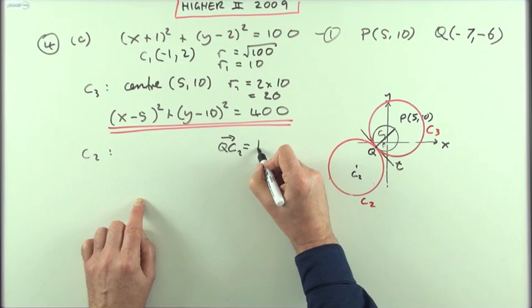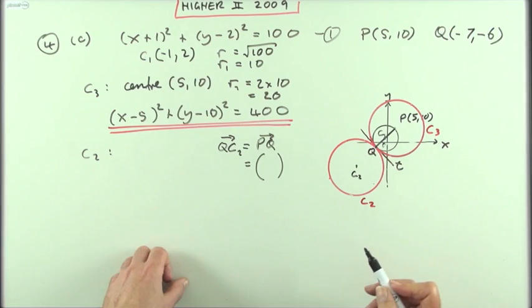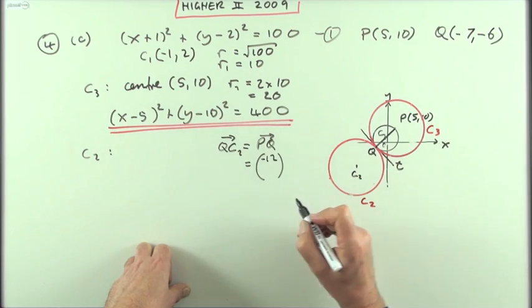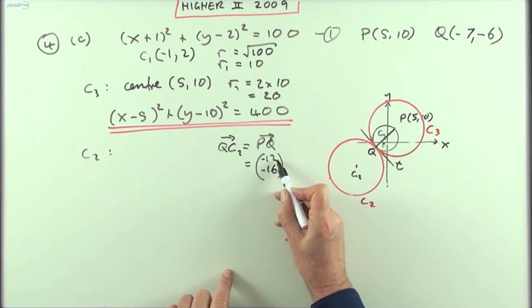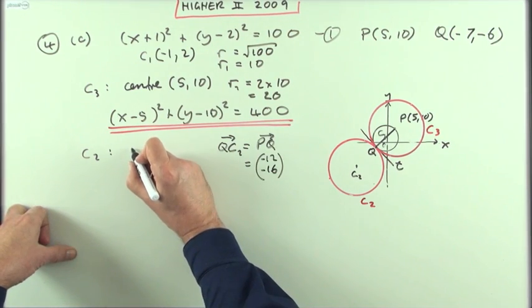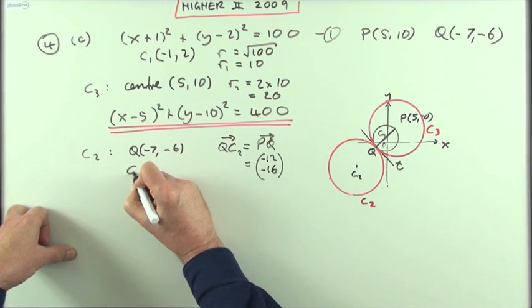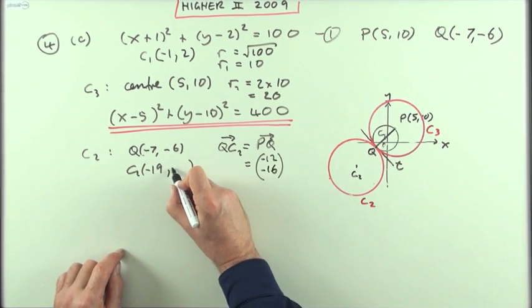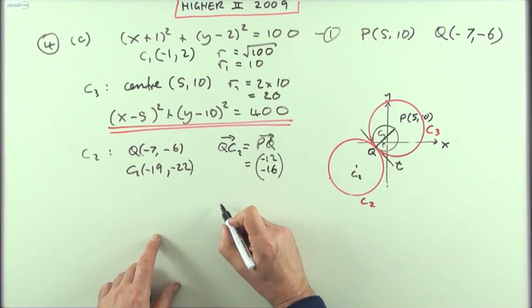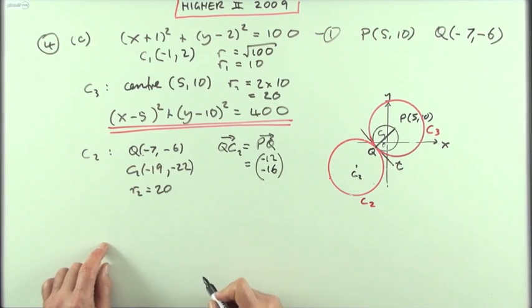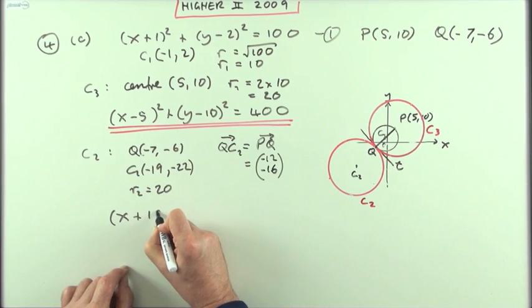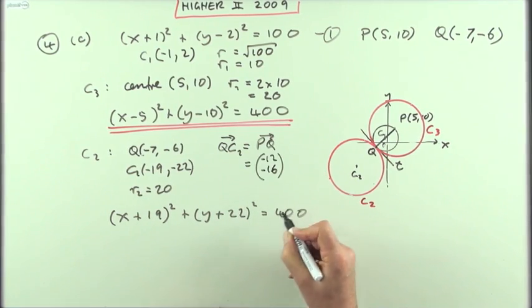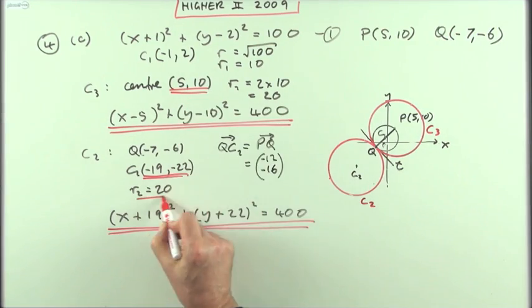And from P to Q, from 5 to -7 is go back 12, from 10 to -6 is go back 16. So to get C₂ I'll go 12 back and 16 down from Q. I'll just put a re-note here, Q is (-7, -6), so the center I'm looking for will be 12 back from this so I'll now be at -19, and 16 down from that so that'll be -22. And again the radius is still the same, the center's there, the radius is the same as the other one which is 20. So its equation will be (x + 19)² + (y + 22)² = 400. There it is.